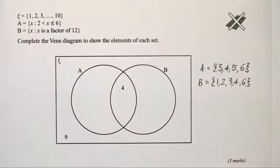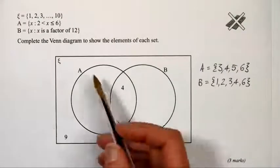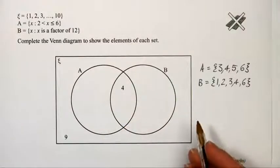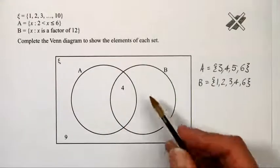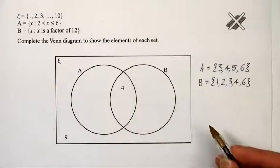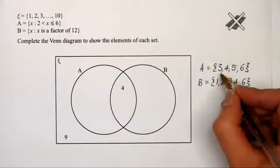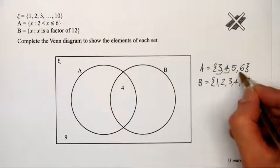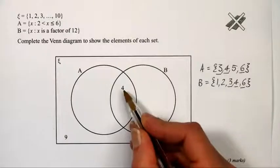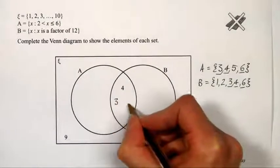Now we want to put the numbers into the Venn diagram. The Venn diagram shows the actual elements rather than just the number of elements. We'll start with the intersection, which is this bit here. That's elements in both A and B: 3, 4, and 6. We've already got the 4, so we'll just add 3 and 6.